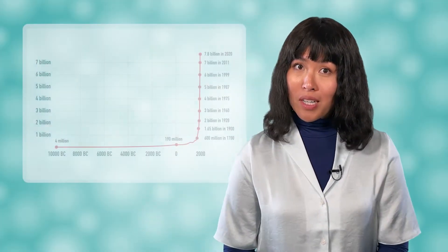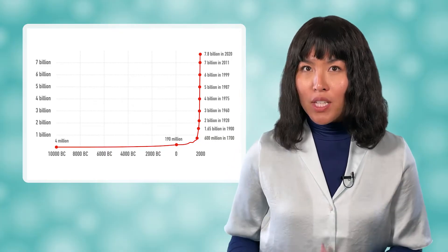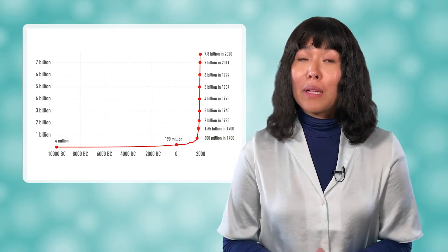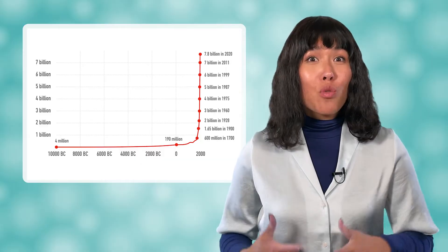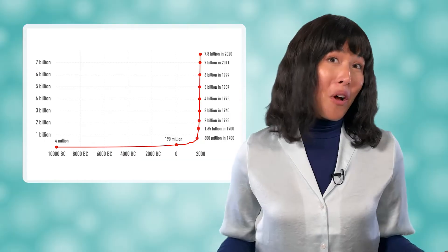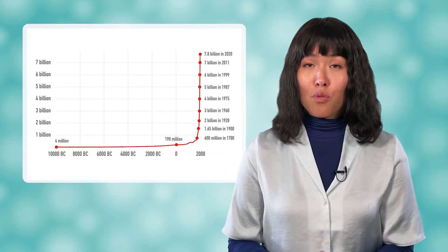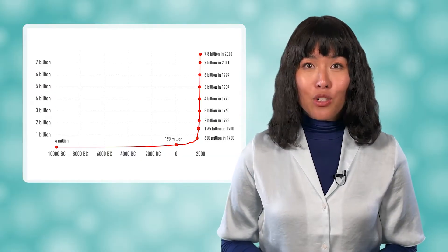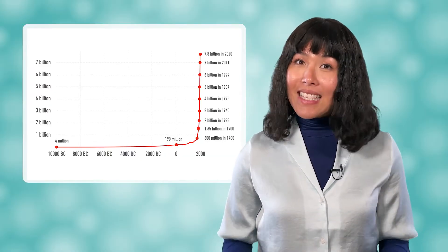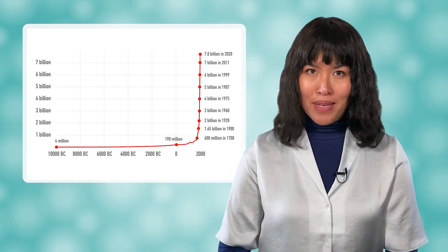Hello, Bea here, and welcome back to biology! Chances are you have seen this graph before. It shows the human population from the year 10,000 BCE to 2020. Most likely you've probably also heard how the human population is growing too quickly for Earth to sustain. However, it is not all bad news. In fact, scientists predict that the population growth will slow considerably by the year 2100. In this lesson, we will look at population growth in general, as well as human population growth.